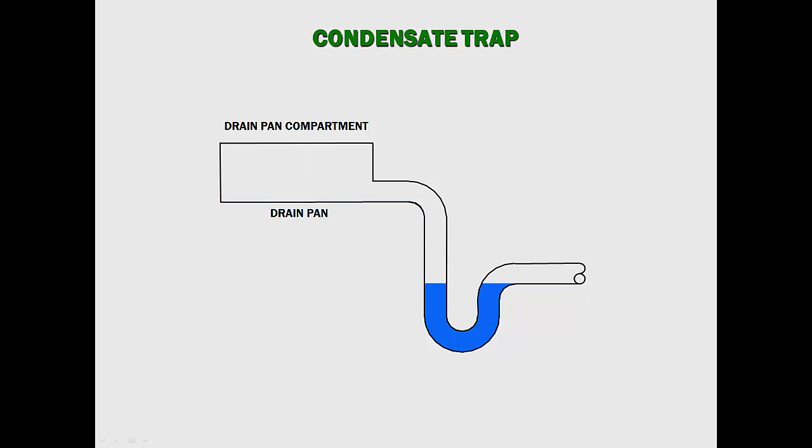When the unit cycles off, the water returns to the trap, and the cycle can be repeated. In theory, the condensate trap appears to be a simple and economical drain seal. In practice, however, it exhibits so many failure modes that it imposes unacceptable damage and contamination on the entire air conditioning system and the building.